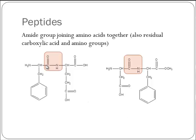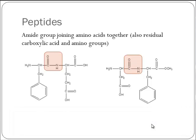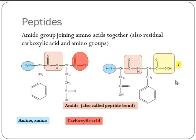There we go — C double bond O, N. This right here is the brand new bond that formed and connected the two amino acids. We should also still have a residual amino group and a residual carboxylic acid group. There's our residual amino group on the left-hand side. We should have a residual carboxylic acid — and there's the residual carboxylic acid in that one, but this one is different.